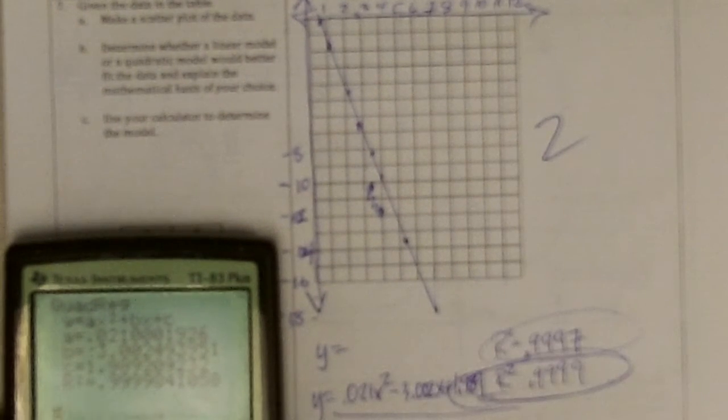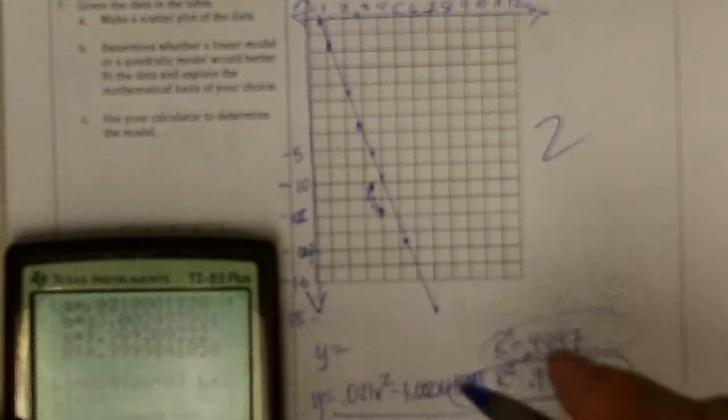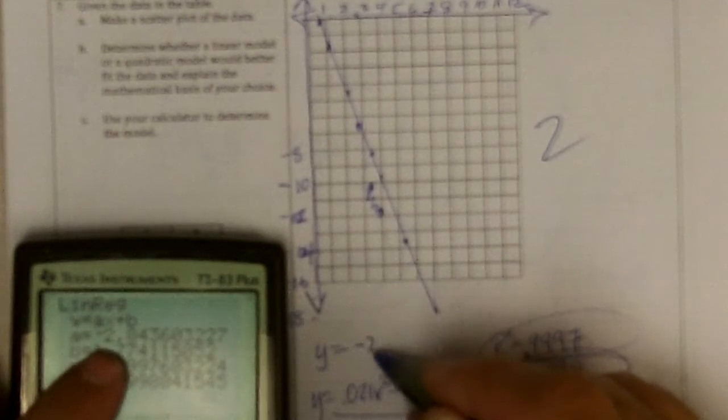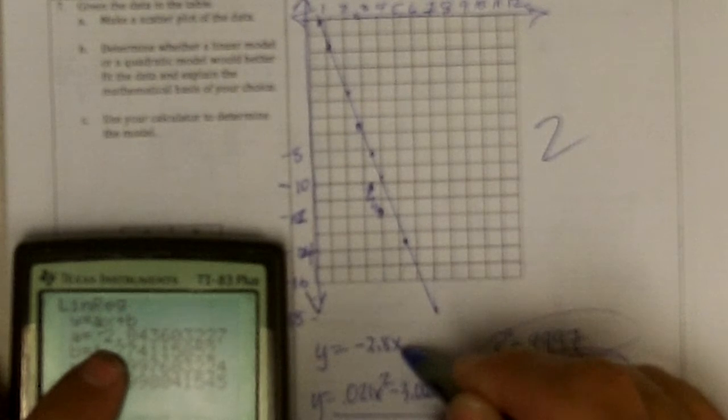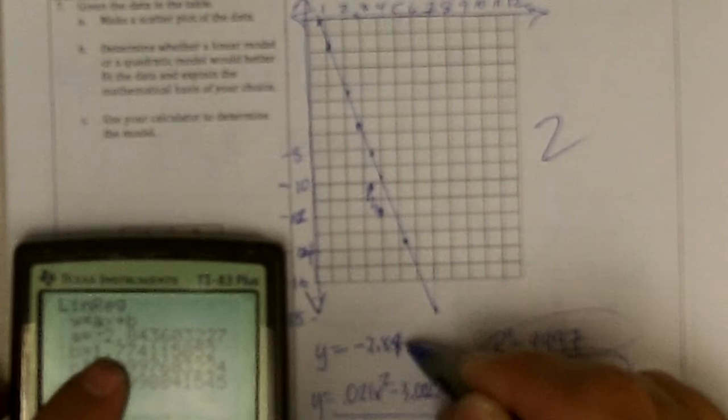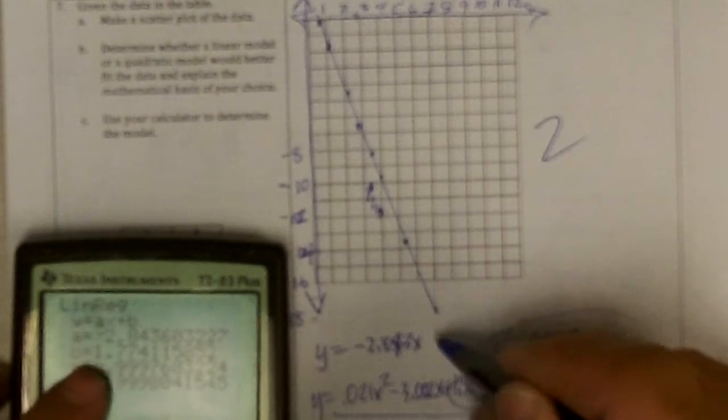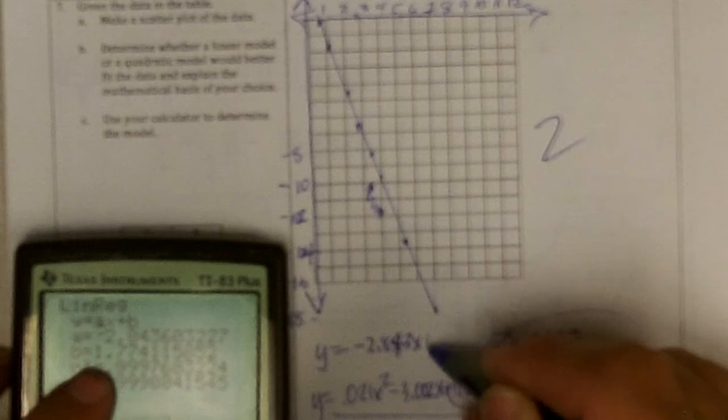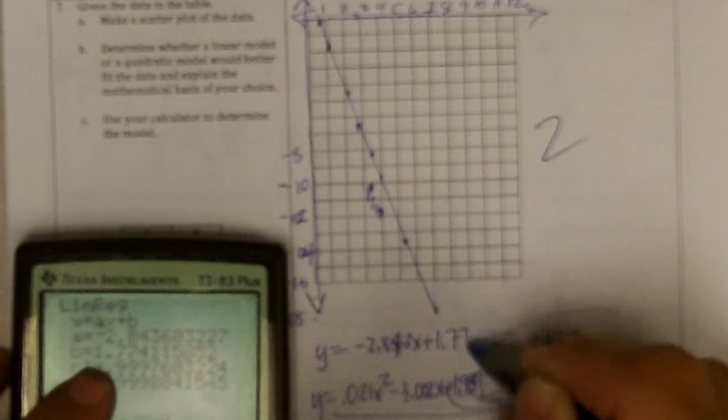The linear model was negative 2.843x, keeping this three digits like I did in the other, plus 1.774.